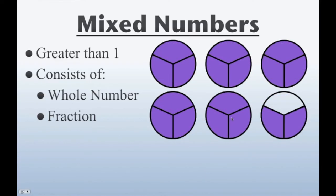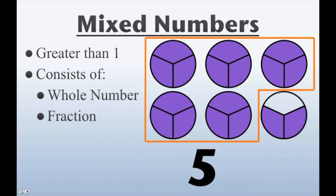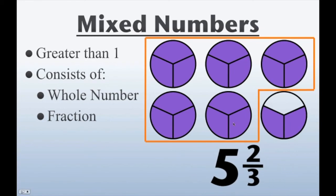And how about this one? Well, each of these wholes has 3 pieces in it. These 5 are completely shaded, so that's 5 wholes. And this whole has 3 pieces in it, 2 of which are shaded, which makes it 2 thirds. And all together, our total value here is 5 and 2 thirds.